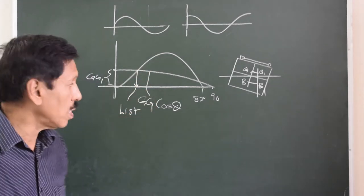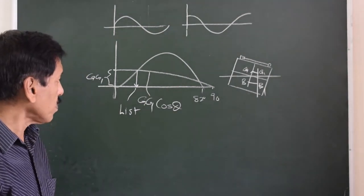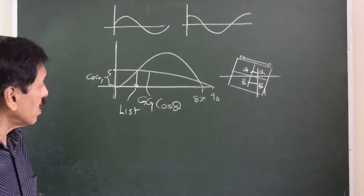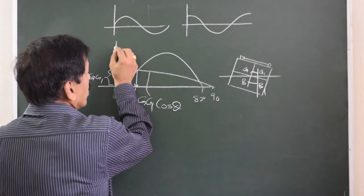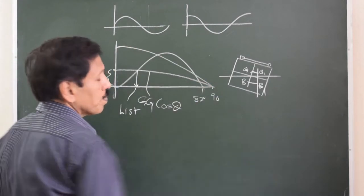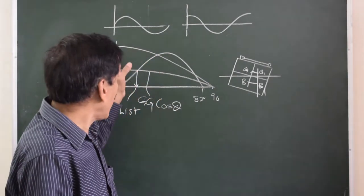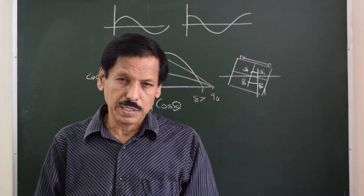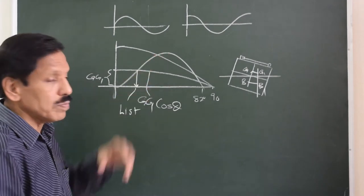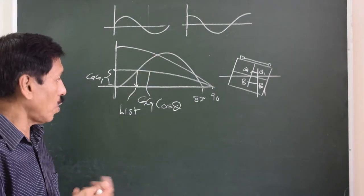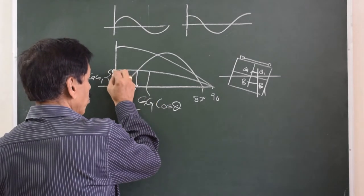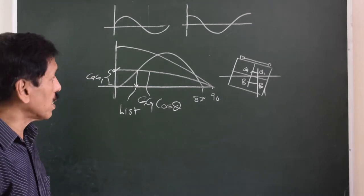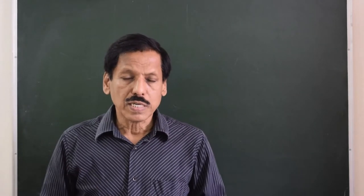The intersection of the GG1·cosθ curve and the GZ curve gives the angle of inclination at which equilibrium is achieved. If the listing moment curve has GG1 greater than the maximum GZ of the ship, the ship will not be able to withstand that listing moment and will capsize. If the listing moment is smaller, the ship will settle at that list but will not capsize.